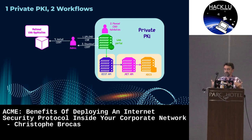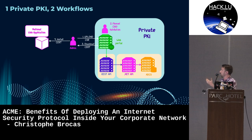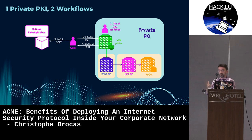The first workflow is powered by a web portal and is fully manual. As you can see on the schema, the administrator uploads their certificate request to the web portal. A CISO, a security person, validates this request or not. If it is validated, the PKI signs the certificate that was requested by the admin. The admin can then download it manually and deploy it on the web application.